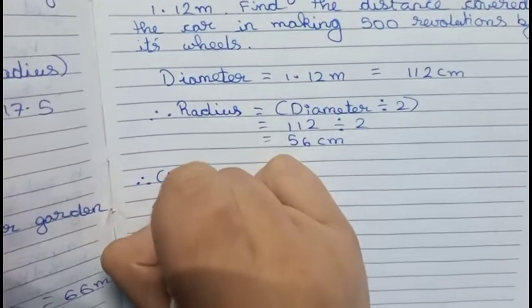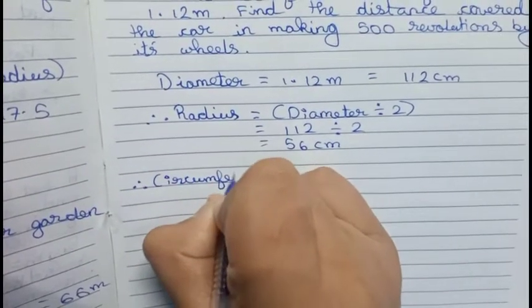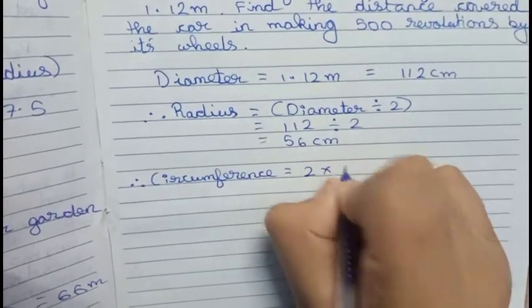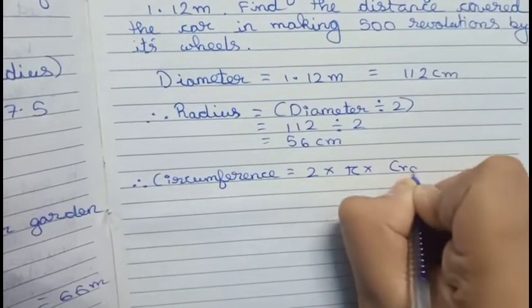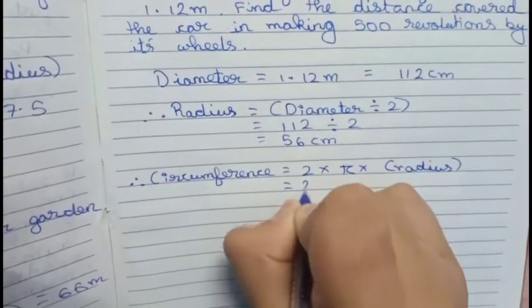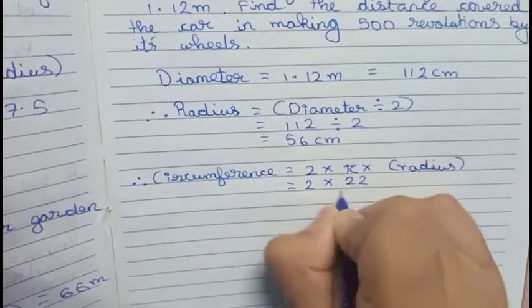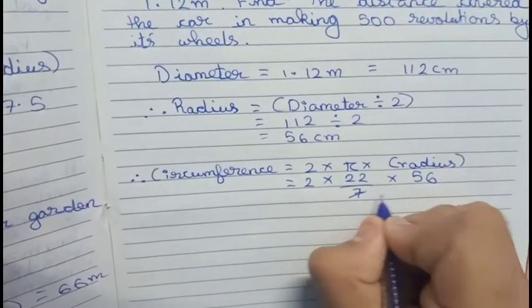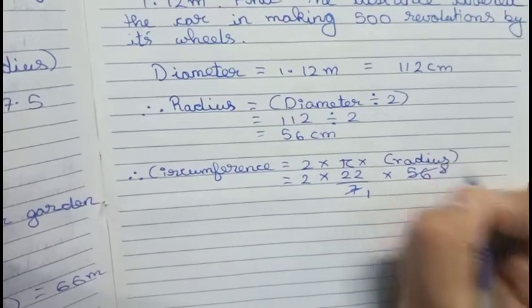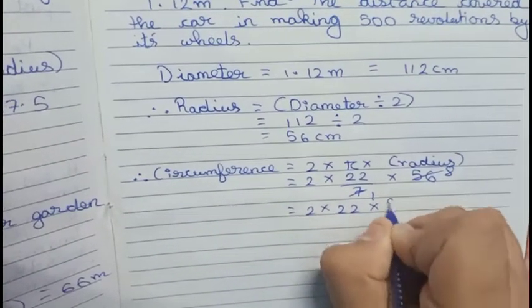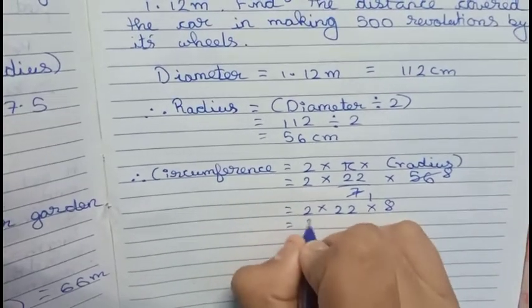We take pi as 22 by 7 into 56. We first take 7 and 56, so it becomes 2 into 22 into 8, which becomes 352 centimeters.